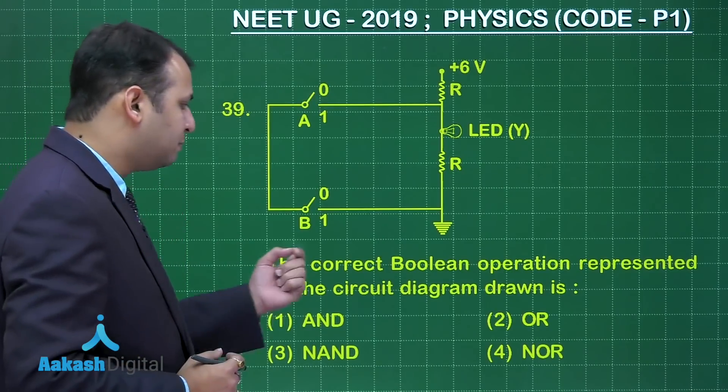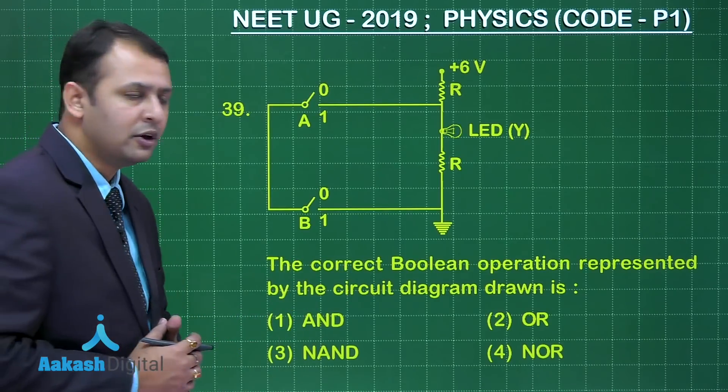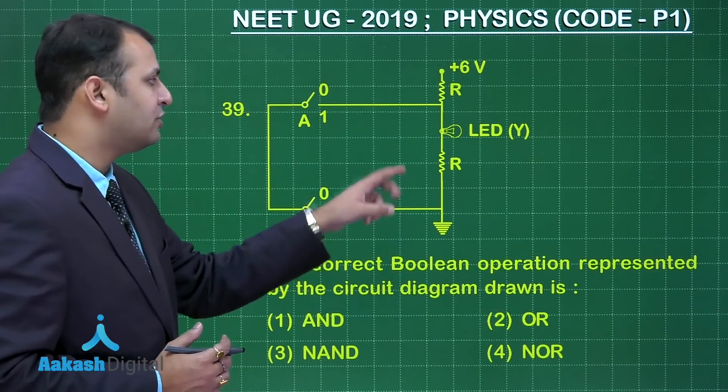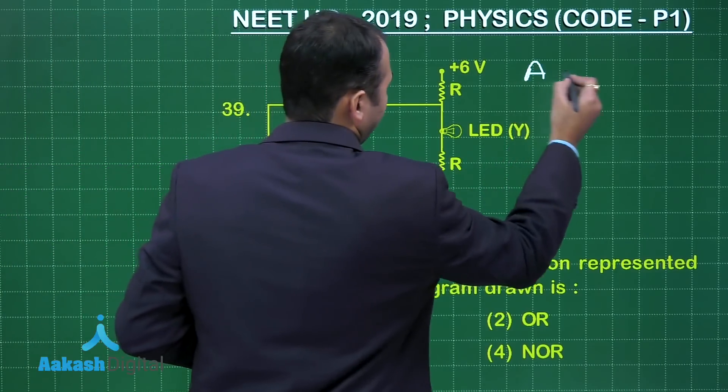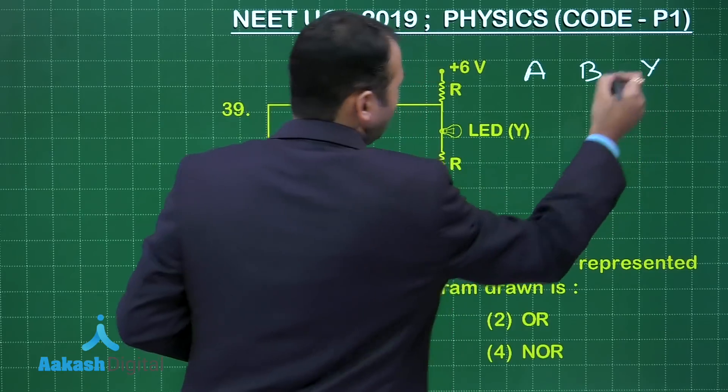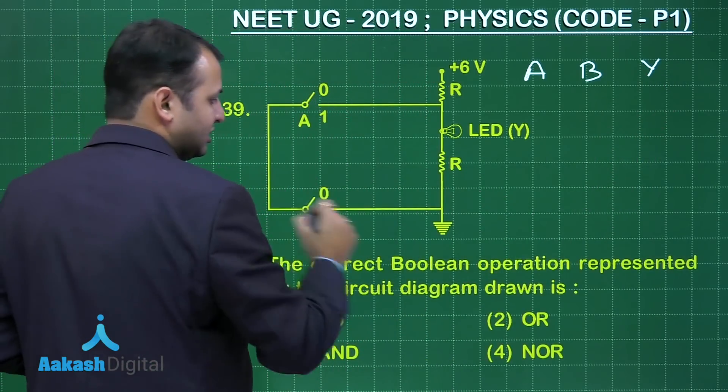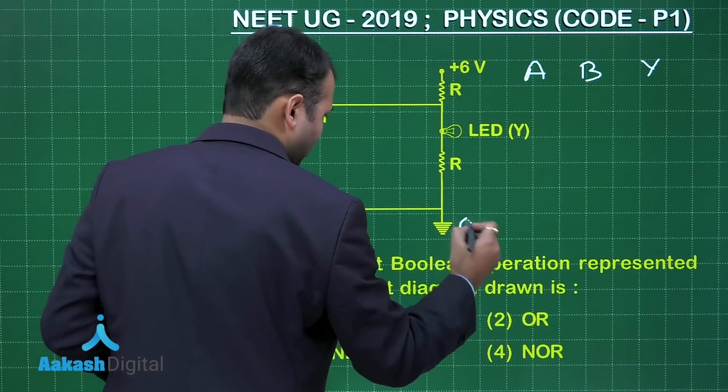Now here the current Boolean operation represented by the circuit diagram is. So in this case the LED bulb will glow when the potential difference is high. So in the case let's say A, B and what is the output. So when you keep this as open this circuit is not connected. The potential at here will be 6 volt and here would be 0 volt.